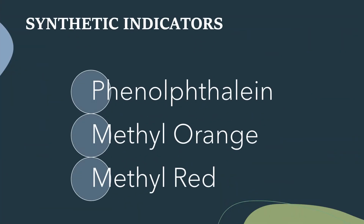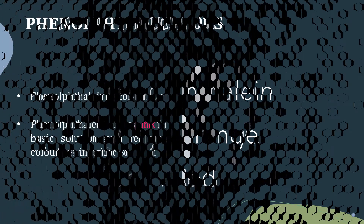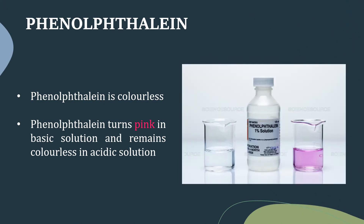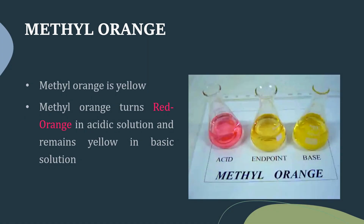Now let's learn about synthetic indicators or man-made indicators. Some commonly used synthetic indicators are phenolphthalein, methyl orange and methyl red. Phenolphthalein is colorless. It turns pink in basic solution and remains colorless in acidic solution. Methyl orange is yellow in color. It turns red-orange in acidic solution and remains yellow in basic solution.